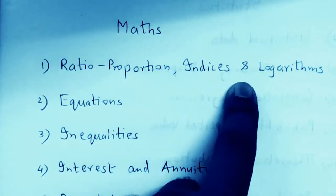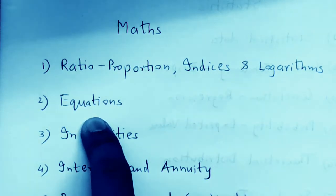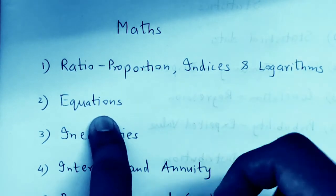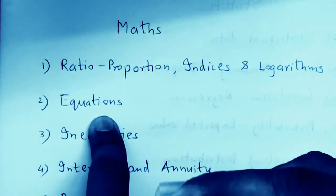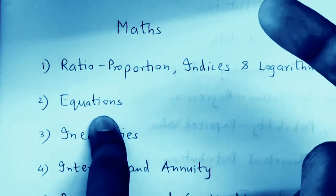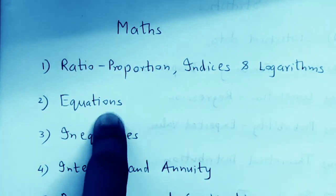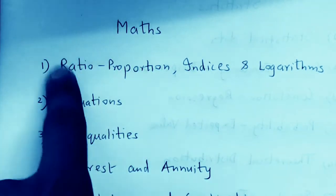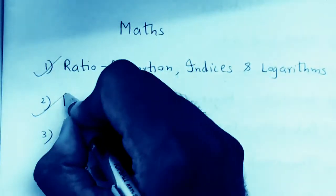Next comes Equations — linear, quadratic, and simultaneous equations can all be easily solved. Many times you can use the reverse technique: go from the options to the question, verify which option satisfies the given conditions, and get the answer easily. So don't leave equations as an option — you have to study this as well.